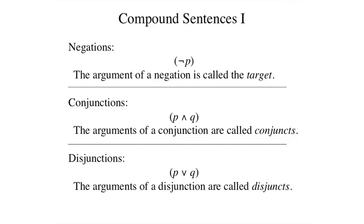For example, given the sentence P, we can form the negation of P as shown here. The argument of a negation is often called the target of the negation.